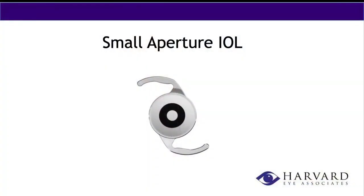The small aperture IOL is actually the latest lens to hit the market — we're just implanting it now and seeing good results. Dr. H actually just put the first one in the other day. This lens is designed to give you a wide range of vision: distance, intermediate, and near. It's currently implanted in only one eye, though we're looking at bilateral implantation. It's really good for patients who have irregular corneas, such as prior RK radial keratotomy. The literature and manufacturer results have been very positive.